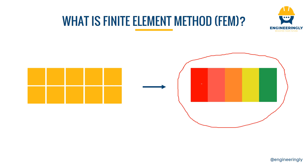In here we can understand that the sections in red are under severe pressure, while the pressure decreases as we go to the right side. At the end of the structure the pressure decreases remarkably compared to the other part. So this is basically what finite element method is and how it works in structural analysis.